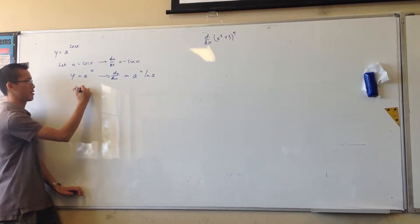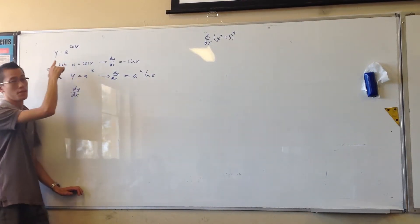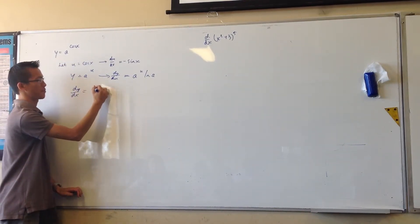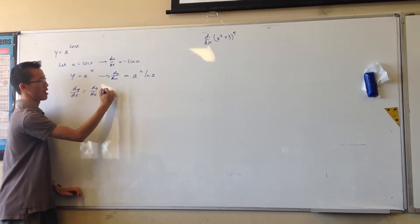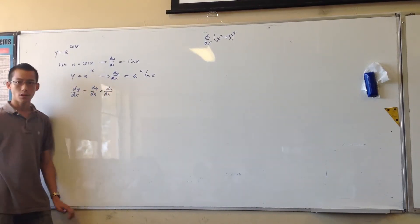Alright, so now dy/dx, which is what I was after in the first place, is dy/du times du/dx.